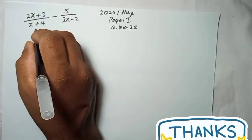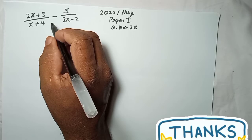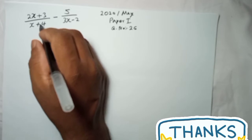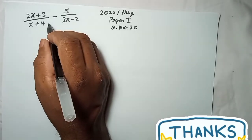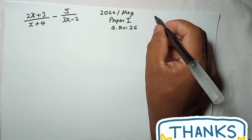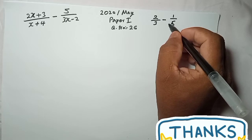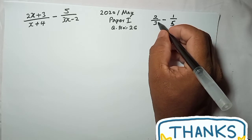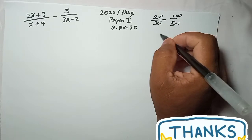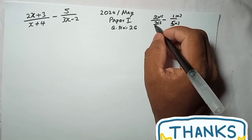We have to get the same denominator. There's another method using LCM, but I'll show you the easier method. Think of it like 2/3 minus 1/5 — to get the same denominator of 15, you multiply this denominator by that one, and that denominator by this one.